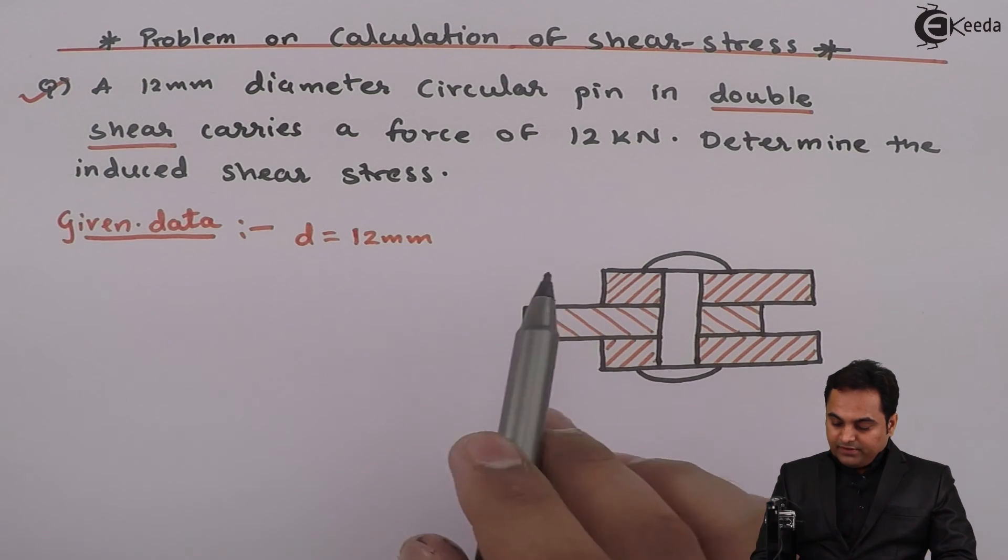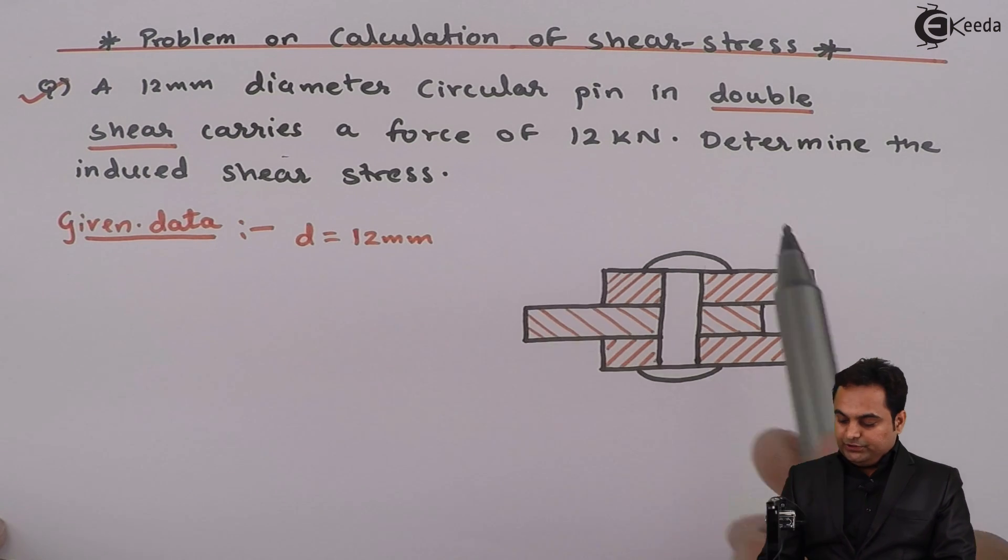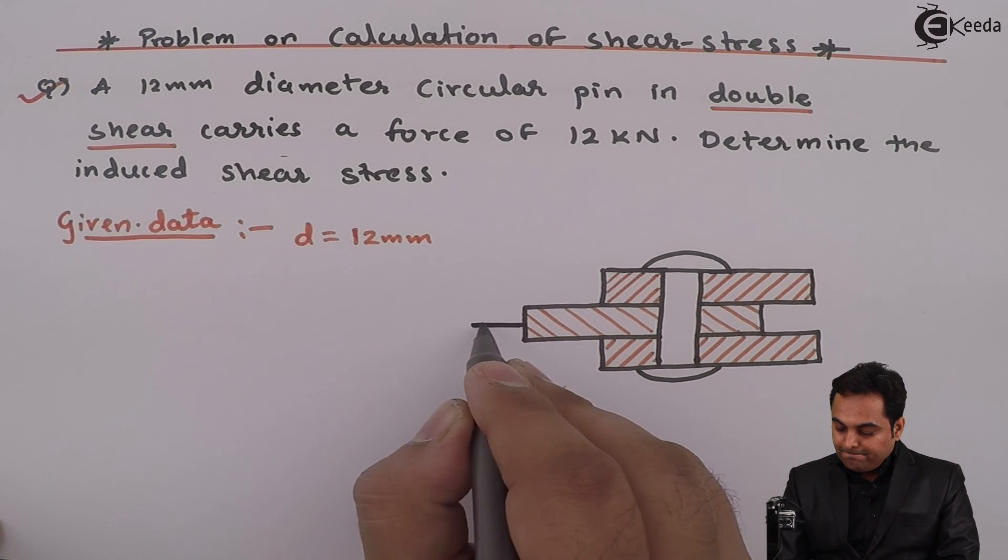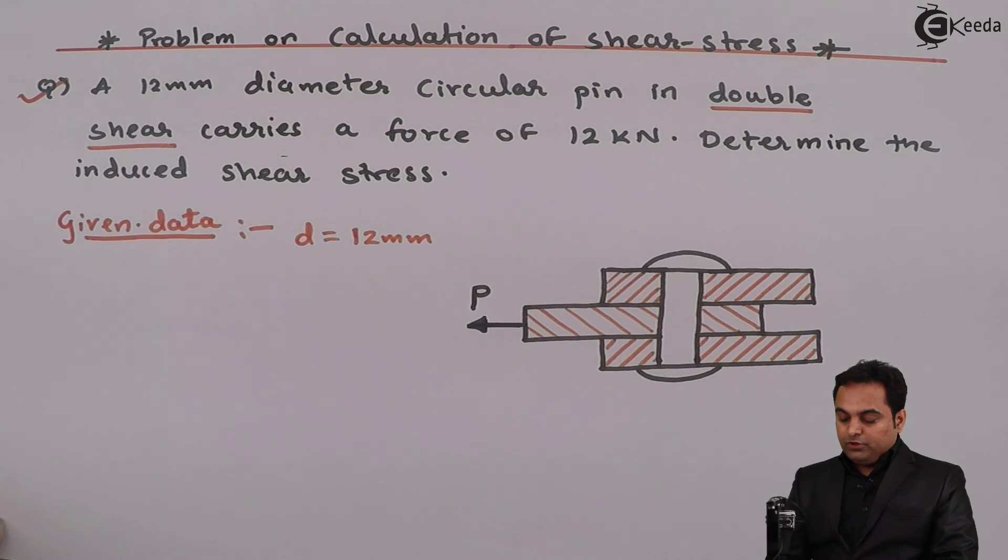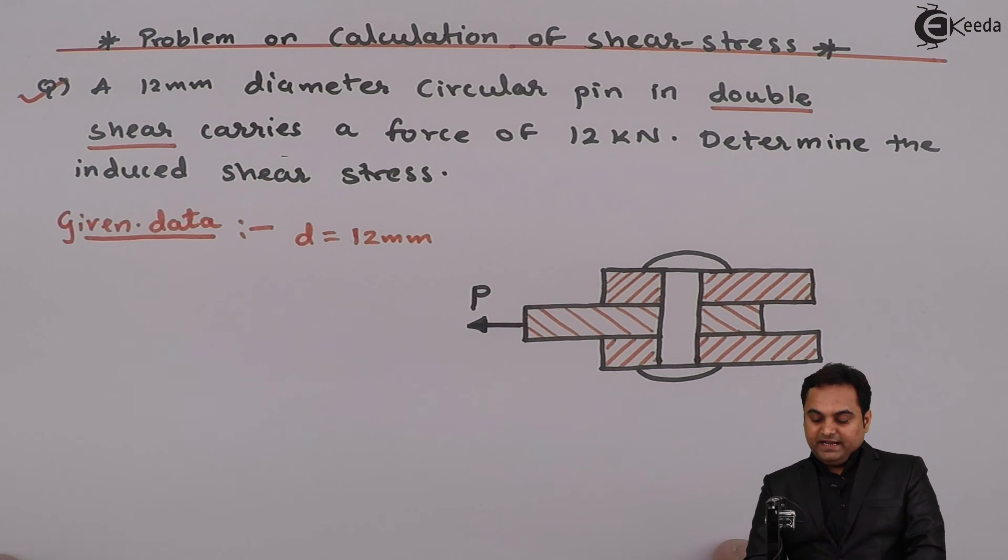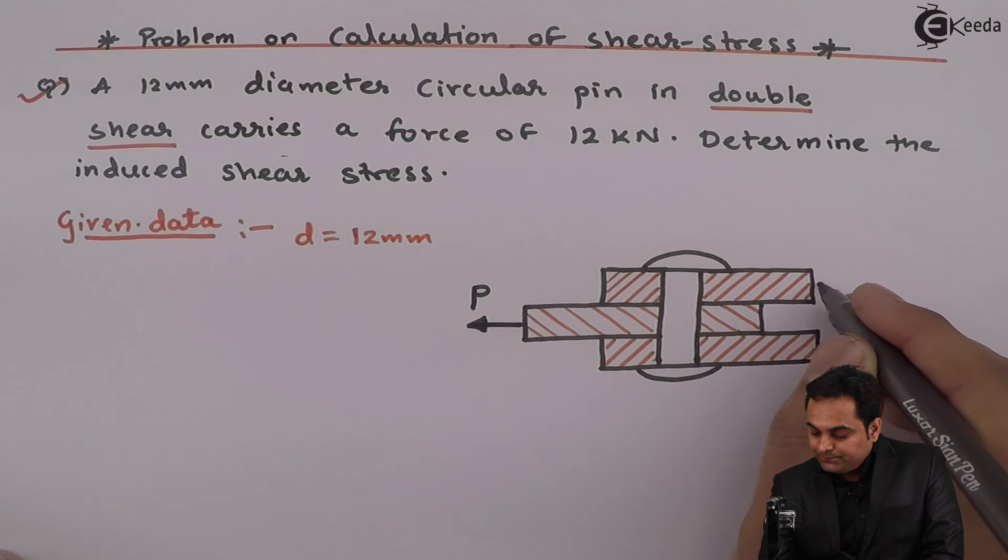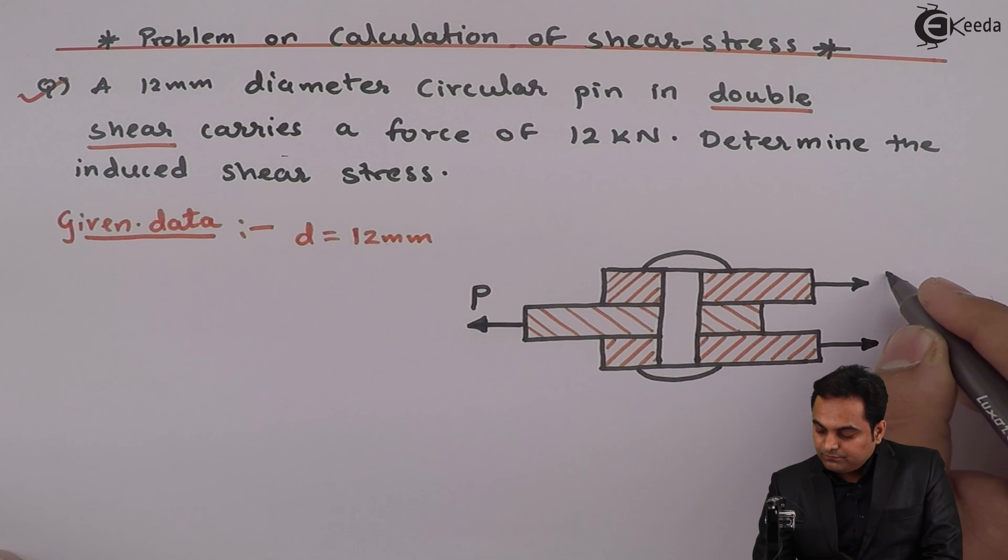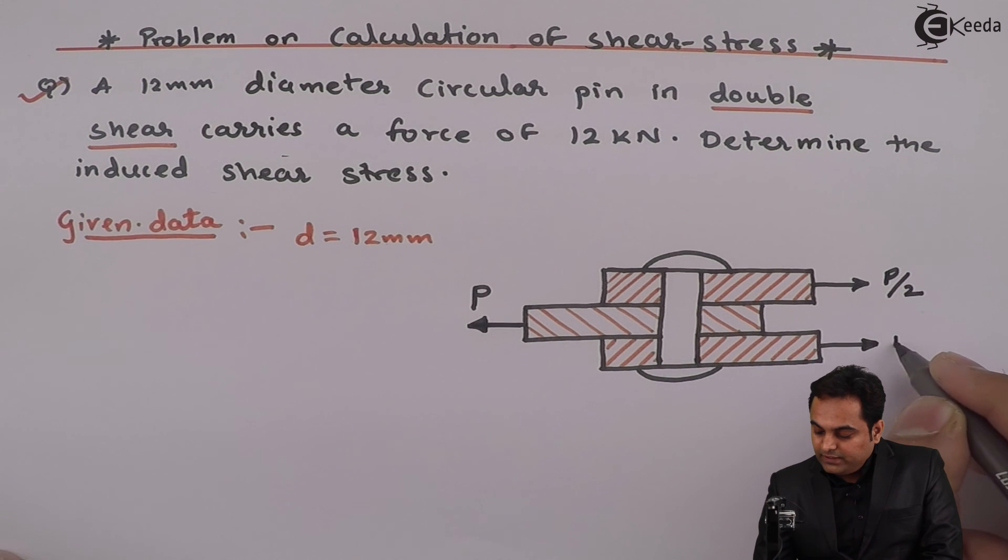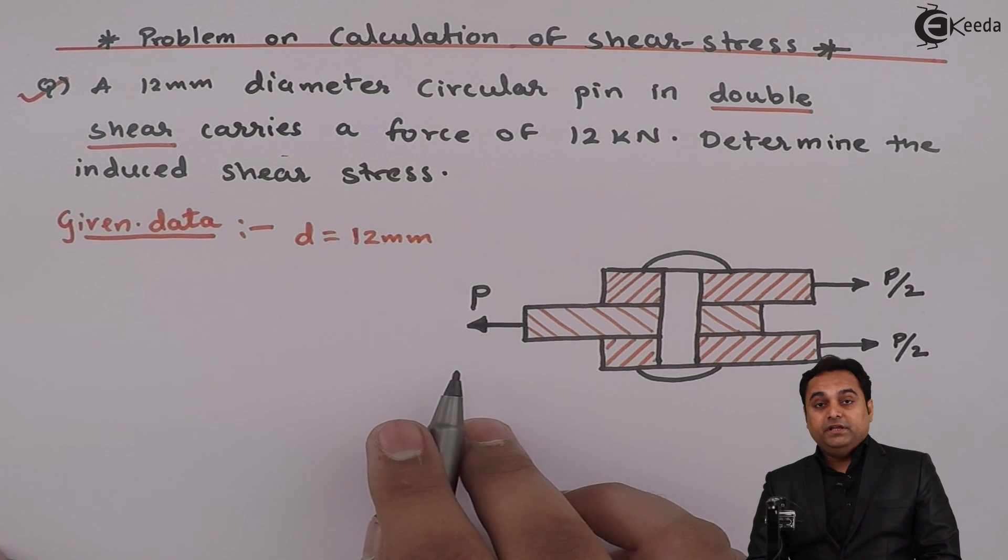It carries a force of 12 kilonewton. Here I am denoting load P which is acting towards left. P by 2 and P by 2 - these loads if I add them will give me the value P.